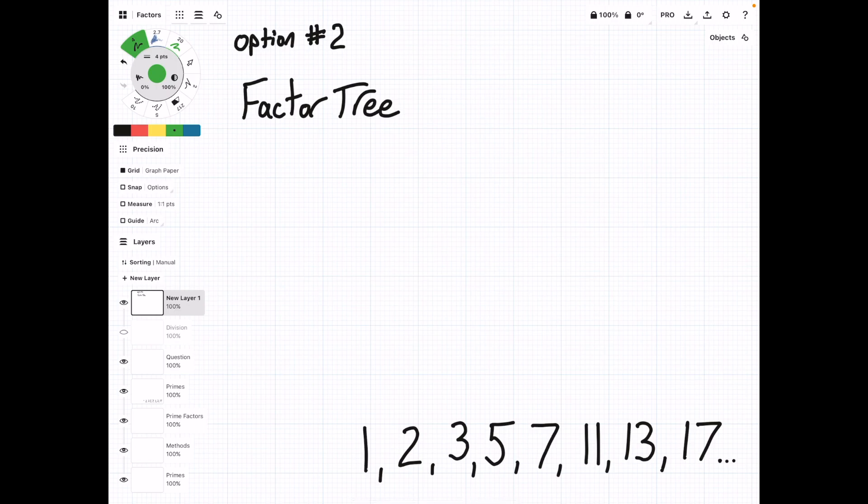So the second option for finding the prime factors of a number is to use the factor tree. This one I actually prefer because it's less strict than the division method. In the division method, you have to use 2, and then you have to use 3, and then 5, and so on. In the factor tree method, you kind of use whatever you can. So starting with 90 again, we can split this into 9 times 10. That's an easy division. Then we see that 9 is 3 times 3. And then anytime you get a prime number at the end of a branch, you just circle it.